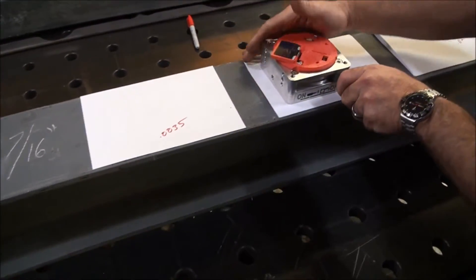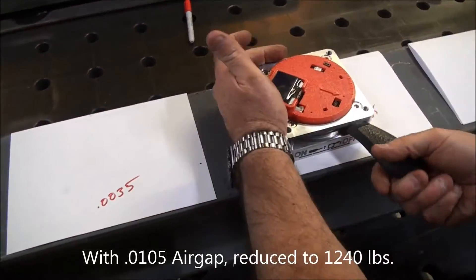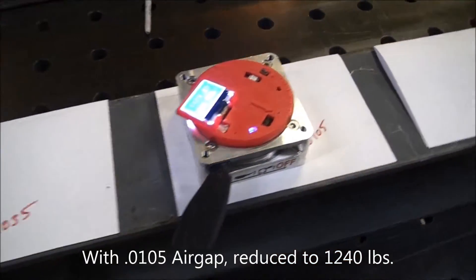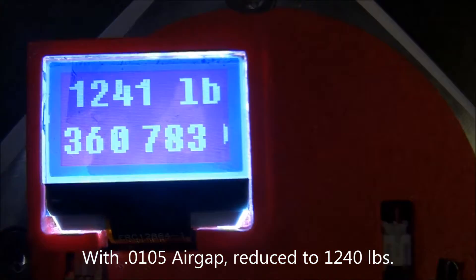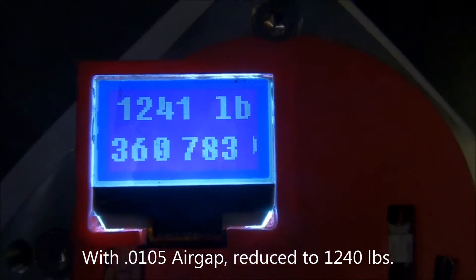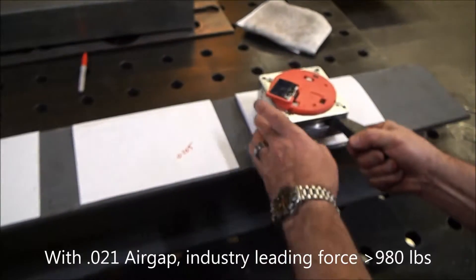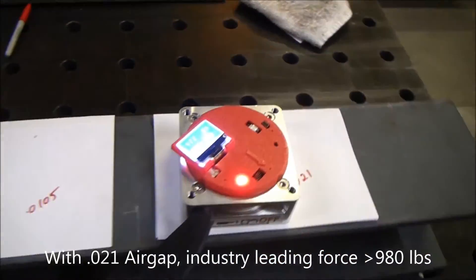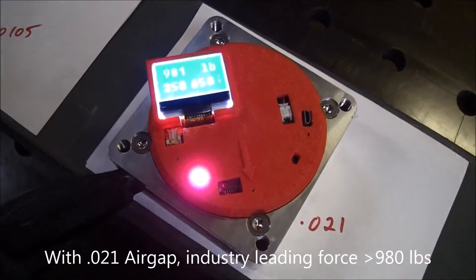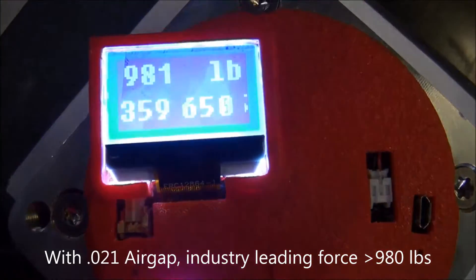A 10 thou air gap is typically considered light surface rust, maybe some surface imperfections. As we get up to a larger 20 thousandth of an inch air gap, that would be comparable to very heavy rust, maybe a coat of paint or two, something that would really seriously impact the holding force of a typical magnet. With ours, we still have industry-leading holding force, in this case, about 980 pounds.